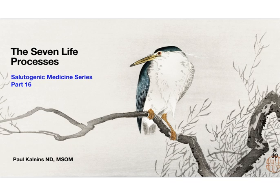In this particular video, I'm going to discuss something known as the seven life processes. We've looked at the fourfold levels of human organization and the so-called three-folding principle in the last video. Today I want to jump into the seven life processes.